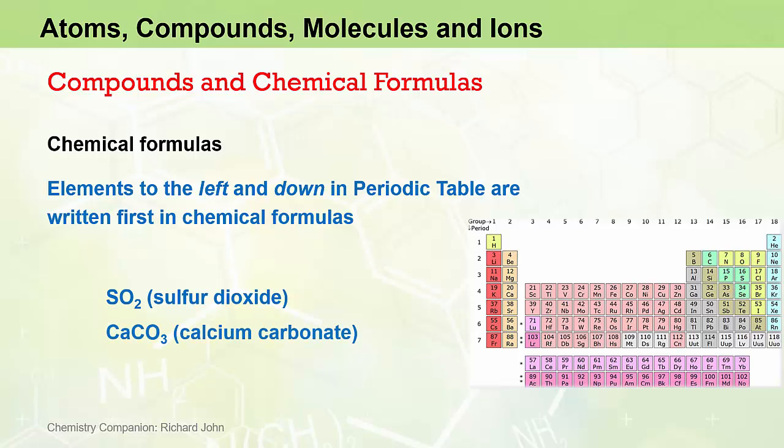The rule even works for compounds containing three elements. Calcium carbonate CaCO3 contains calcium, carbon, and oxygen. Looking at the periodic table, we see calcium is the furthest left, followed by carbon, and then oxygen. And so the elements are written in that order in both the chemical formula and the full name. Same with potassium permanganate KMnO4. We see that potassium lies to the left with manganese in the middle and oxygen on the right.